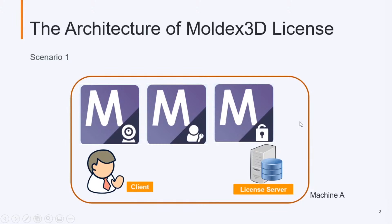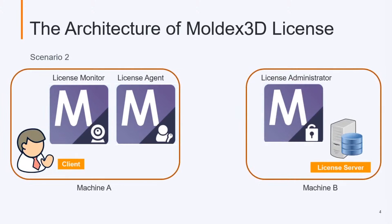In the other scenario, we have separate machines. We save the license on one machine and only install the license administrator on that machine. On the other machine, we install the main program, which includes the license monitor and license agent.